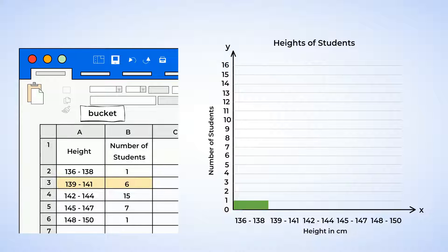And next, in the 139 to 141 centimeter range, there are six people. Again, we're going to draw the bar up to six, make sure it is touching the first bar, and also make sure that the bars are the same width.